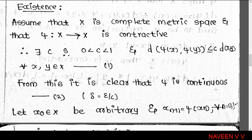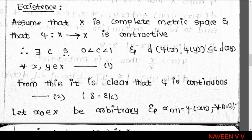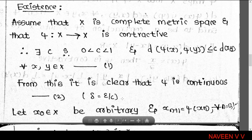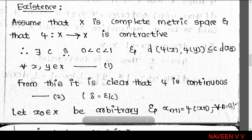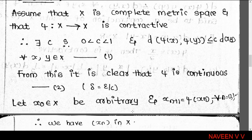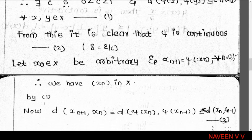A function f on metric space X is uniformly continuous if, corresponding to every ε > 0, there exists δ > 0 such that whenever d(x,y) < δ, we have d(f(x), f(y)) < ε. Here, given d(φ(x), φ(y)) ≤ c · d(x,y) for all x, y in X, choose δ = ε/c. Then whenever d(x,y) < δ, d(φ(x), φ(y)) ≤ c · (ε/c) = ε. So φ is uniformly continuous.